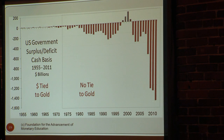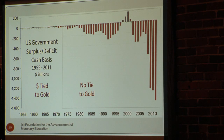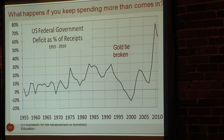In terms of the government's fiscal position, the government started running enormous deficits after the last tie to gold was broken. We had a fairly balanced budget up until 1971, but after 1971 you're starting to get tremendous deficits. On a cash basis this is clear; on an accrual basis it's like three to four trillion dollars a year.